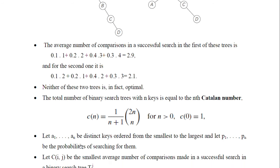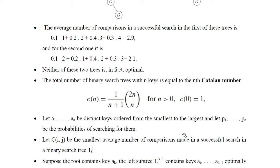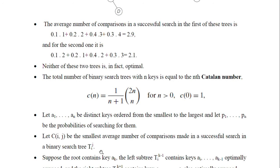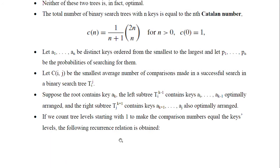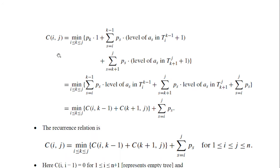Suppose A1 up to AN are the different keys used to form a binary search tree, and P1 up to PN are the probabilities of searching for them. Let C(i, j) be the smallest average number of comparisons for the tree T(i,j). C(i, j) equals the minimum, because we want the tree with the minimum number of comparisons. Suppose Pk is the node forming the root — the average comparisons needed for the root is 1.